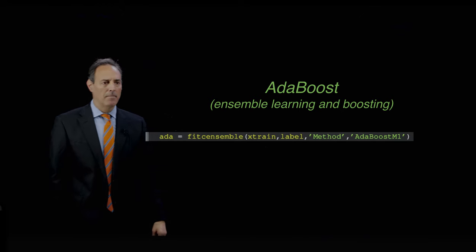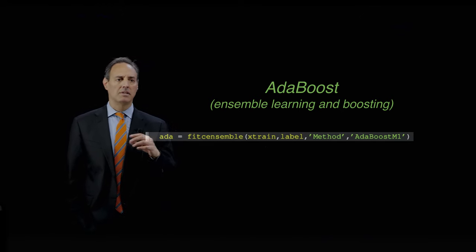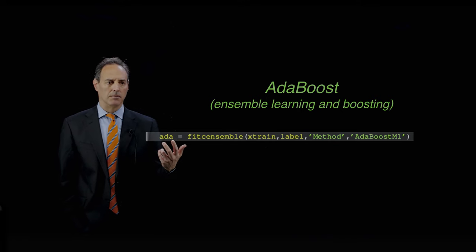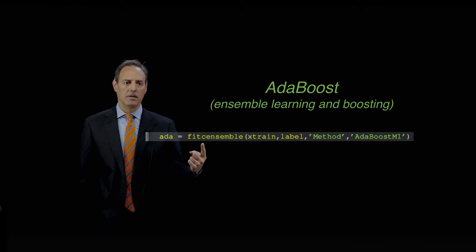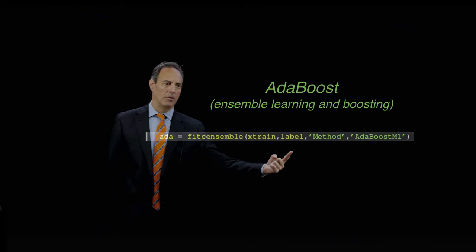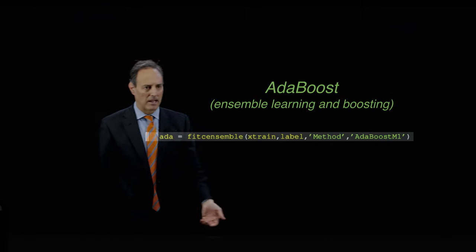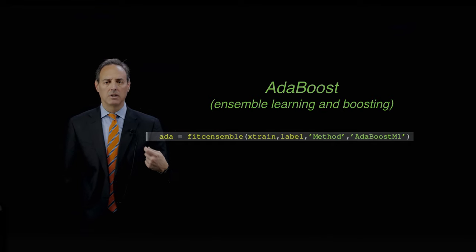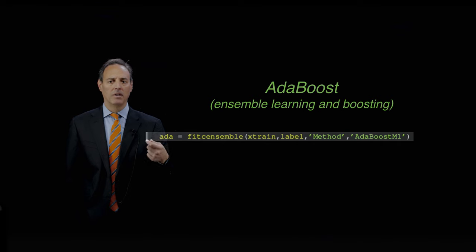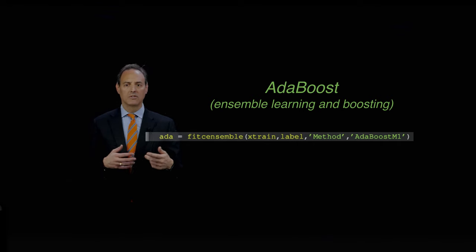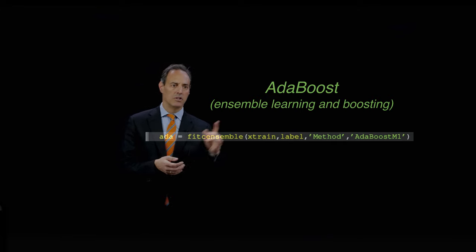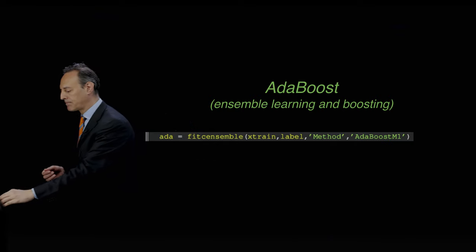AdaBoost. AdaBoost is an ensemble learning. This is basically taking multiple models and training across multiple models and using the information across multiple models in order to make classification decisions. Here's the command for it. Ada equals fit ensemble training data label method AdaBoost M1. This is like in MATLAB. It's a very powerful technique, commonly used. Boosting is really an ensemble learning, both known to be really important ways to help your performance in doing classification and clustering tasks. That's also built in here and used heavily.